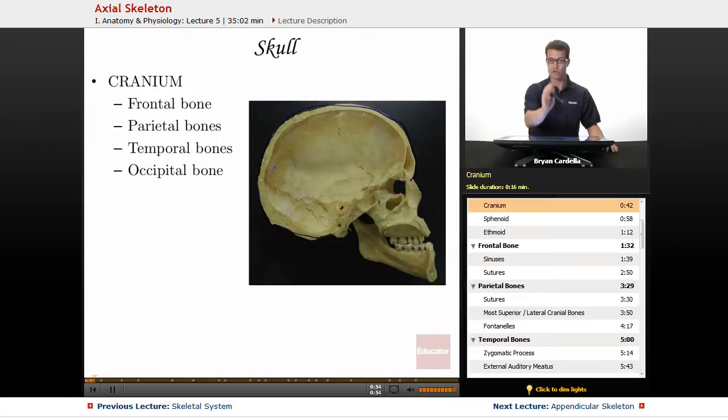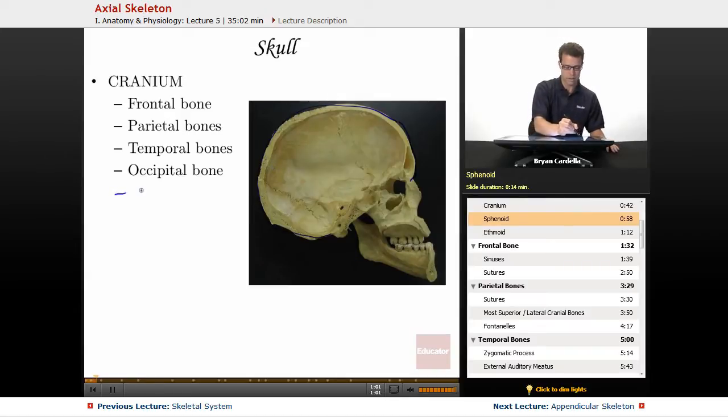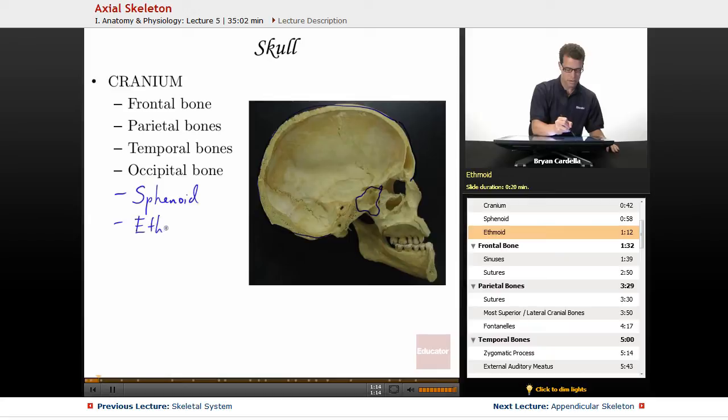You can see we have a sagittal cross section straight through the skull here. There are two other bones that are associated with the cranium, often forgotten. That's the sphenoid, which is right here, and the ethmoid bone, which makes up a lot of the nasal cavity. They do articulate with those other cranial bones and form at least a part of the cranial cavity, so they're considered part of the cranium as well.